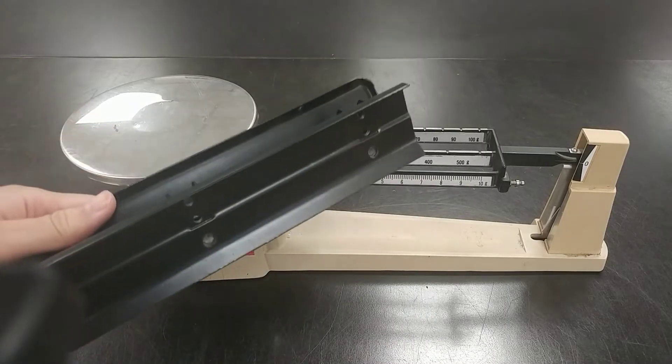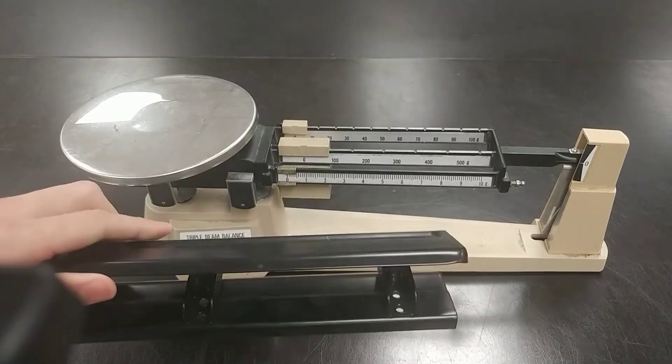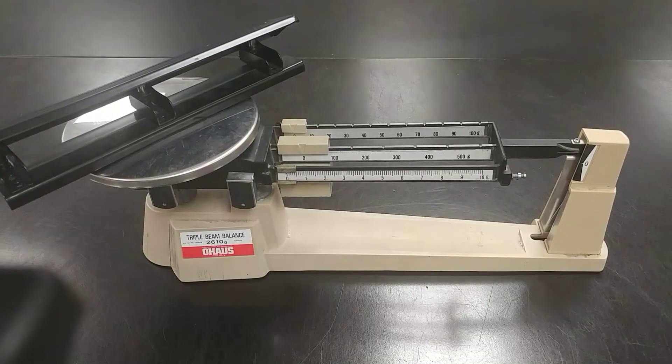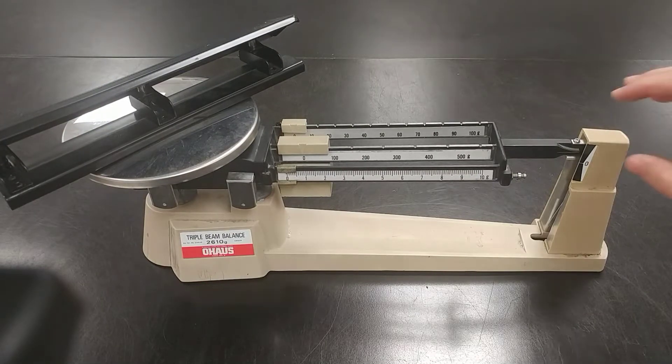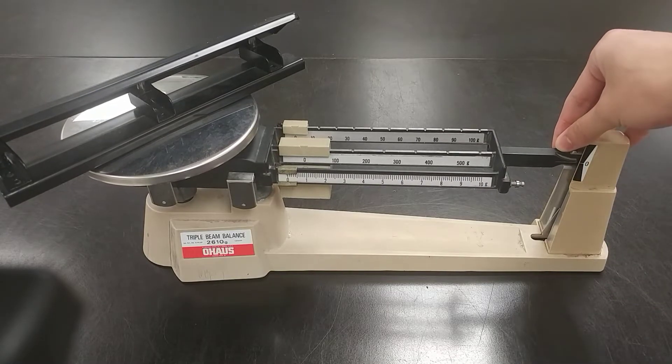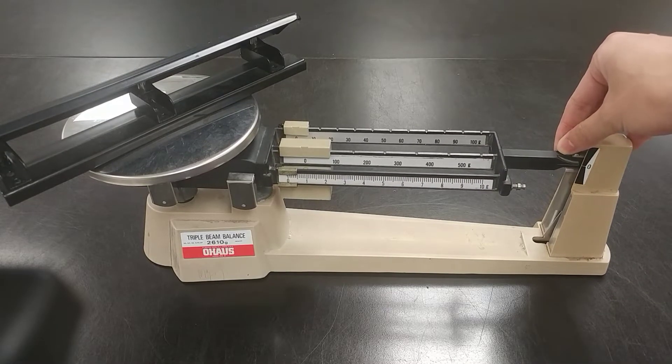We're going to use this balance to measure the mass of a hole puncher today. To begin, we're going to place the hole puncher onto the plate. Our goal is to get this to be exactly in line with zero in order to find the mass.